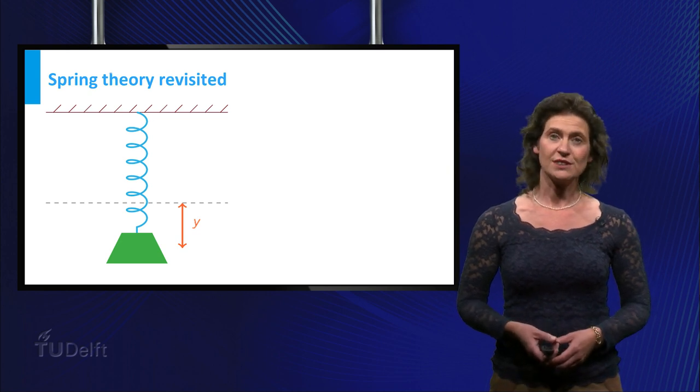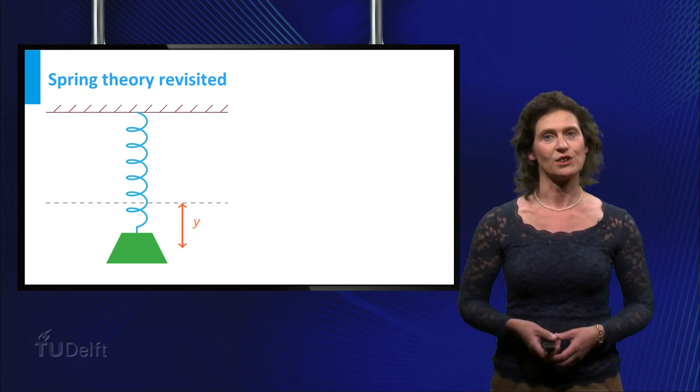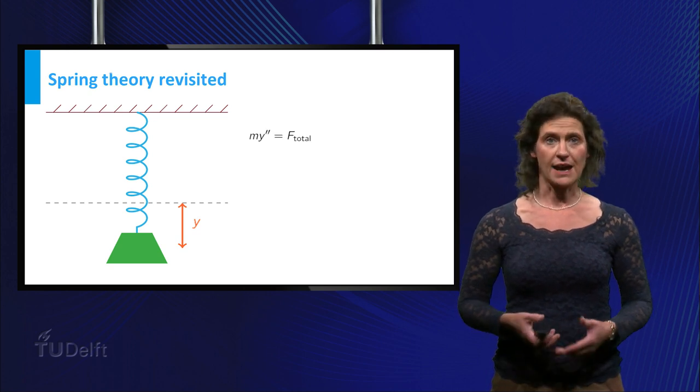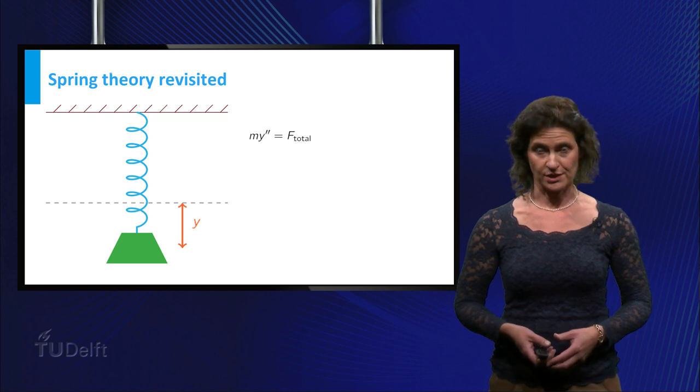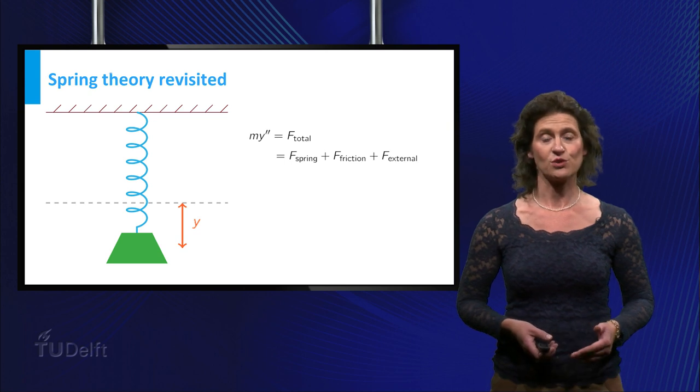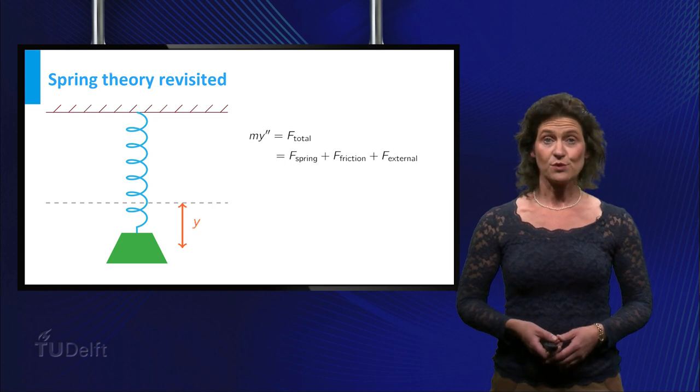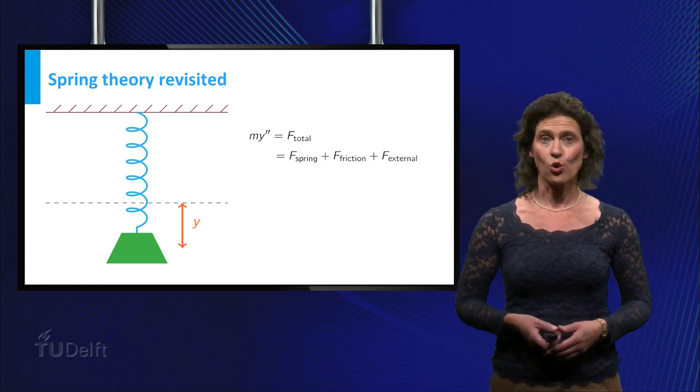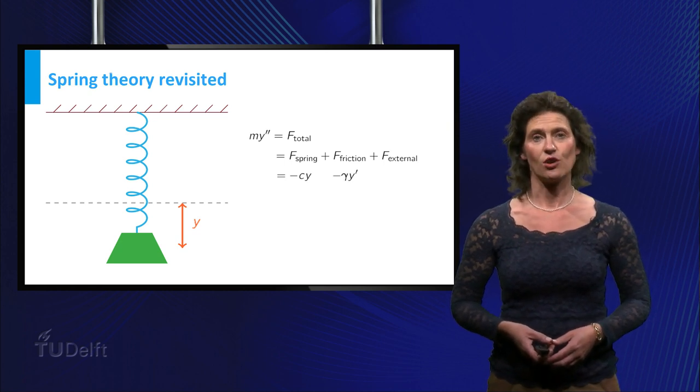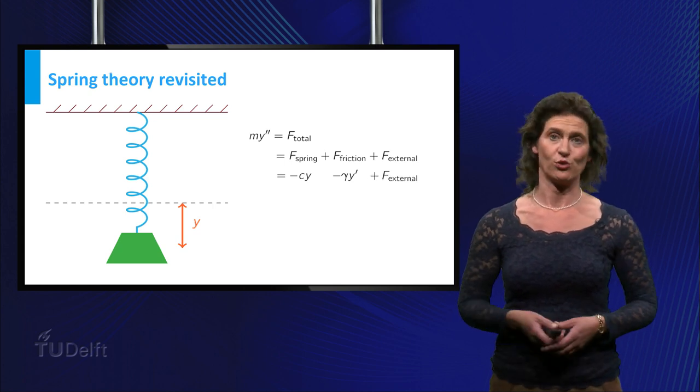This could be for instance your friend pulling the bungee jump cord or the wind exerting force on a bridge. The bottom line still is mass times acceleration equals total force, which is restoring force F_spring plus friction force F_friction plus the external force. In this formula, we can use Hooke's law for the spring force and the approximation of the friction force by a constant times the speed plus the external force.